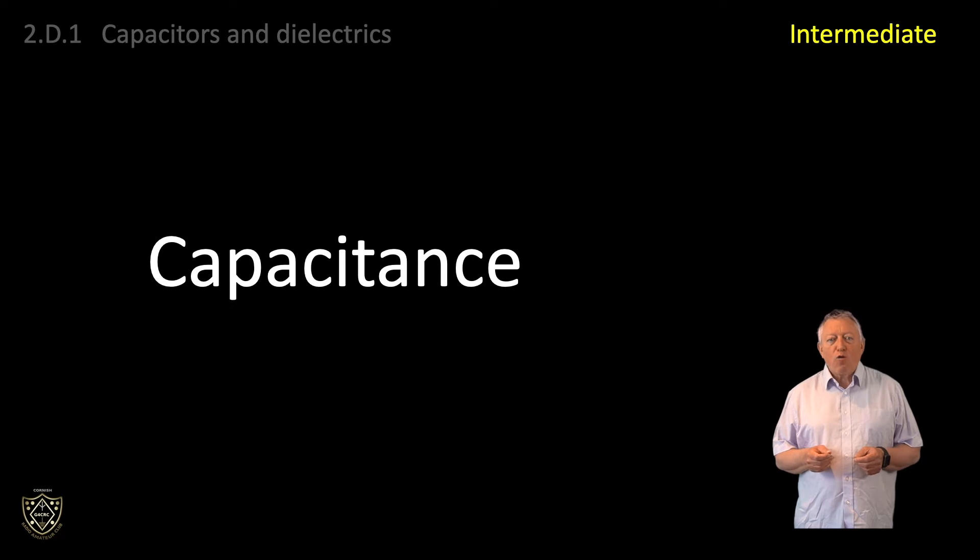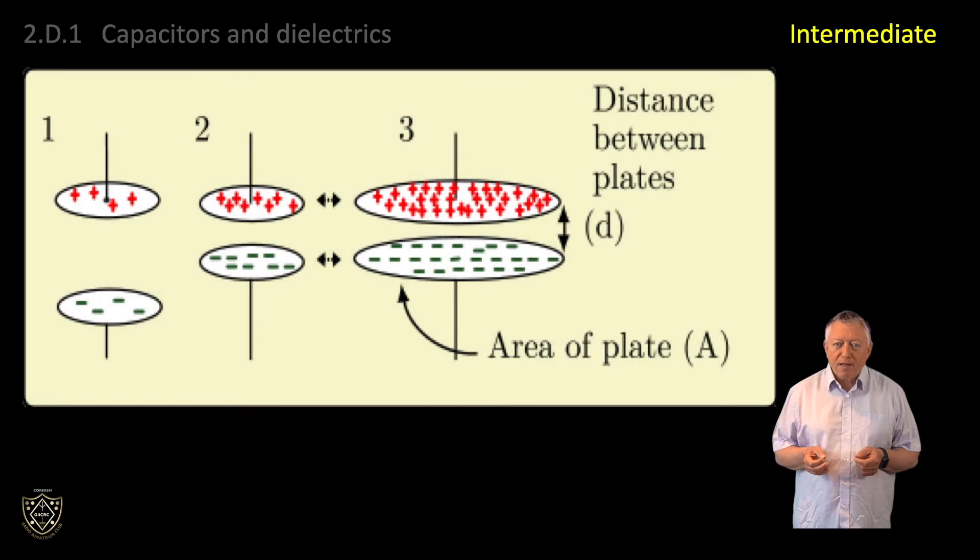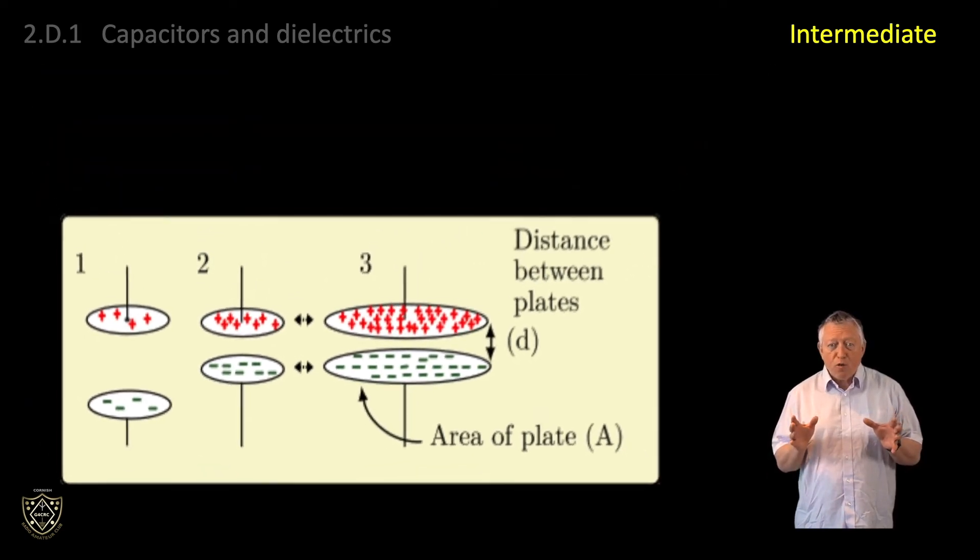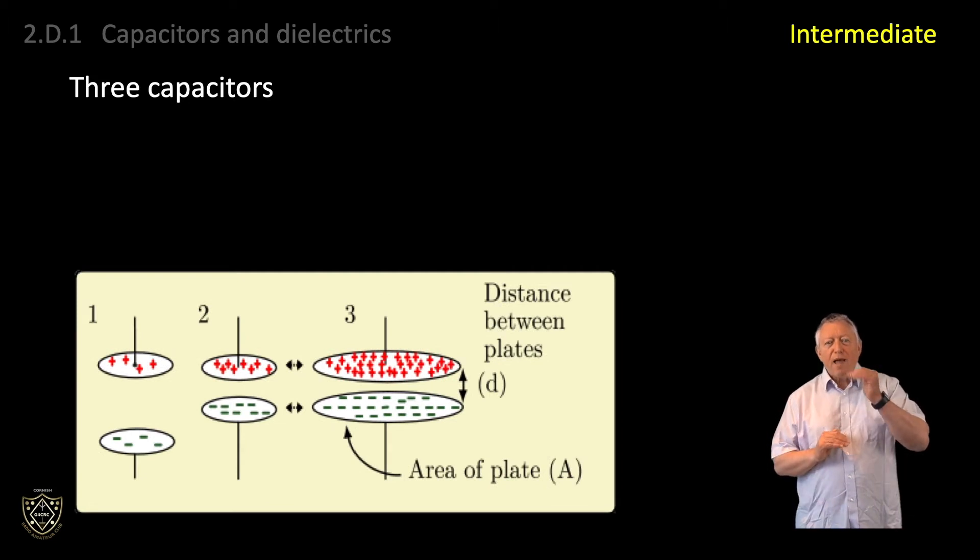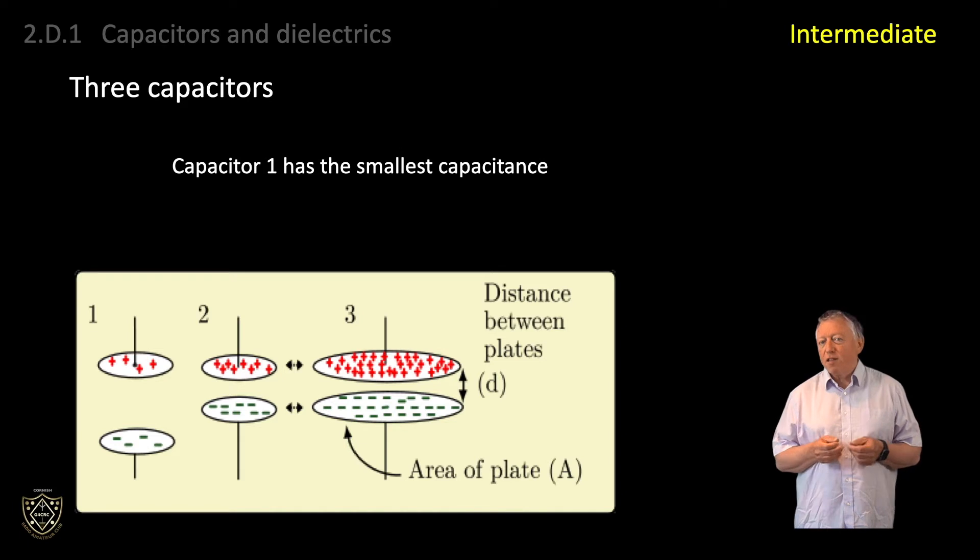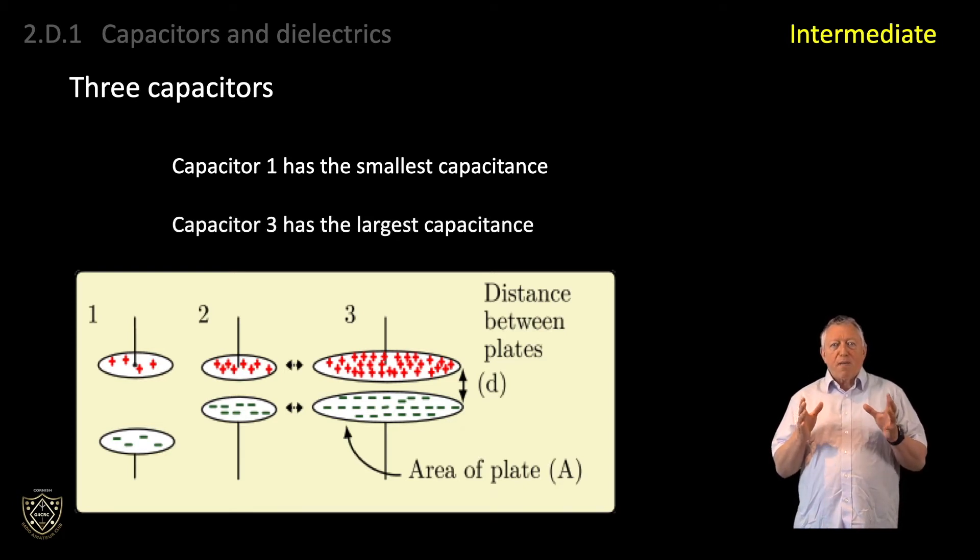The graphic shows three capacitors with charge carriers accumulated on the plates. Capacitor 1 has the smallest capacitance, as although the area of the plates is equal to capacitor 2, the gap between the plates is greater, and consequently the charge that gathers on the plates is smaller. Capacitor 3 has the largest capacitance because its air gap is the same as capacitor 2, but it has larger plates.